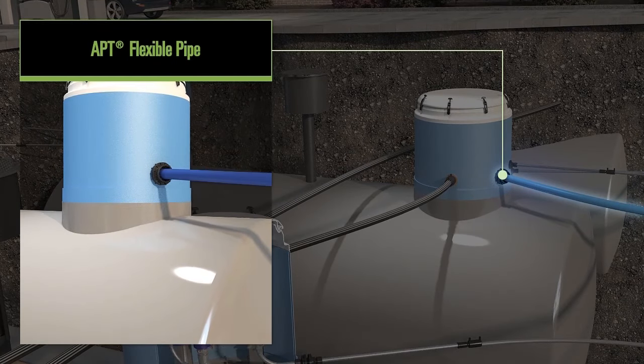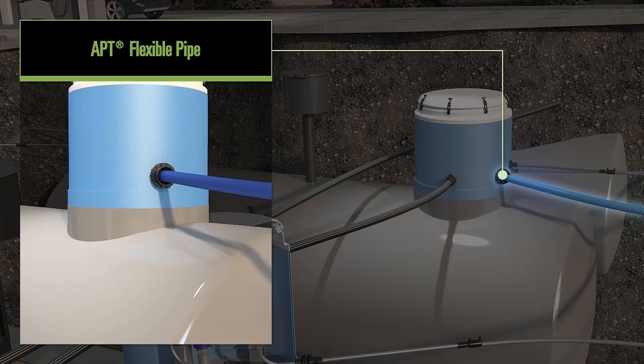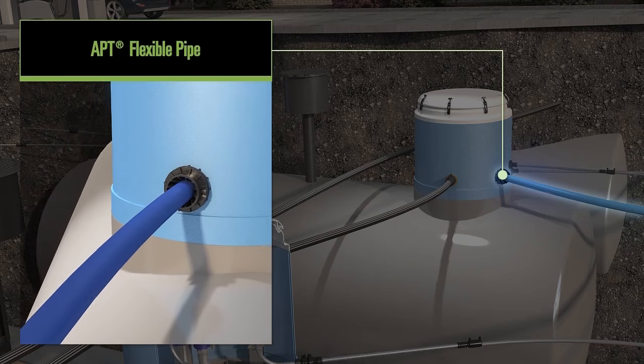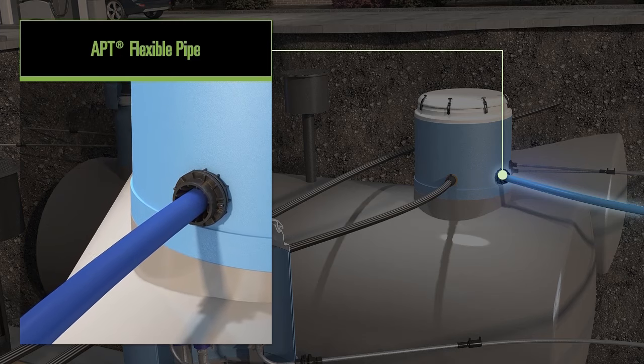Our APT brand flexible pipework system can be installed in single long runs and move throughout the system without requiring joints to help it change directions while eliminating leak points.